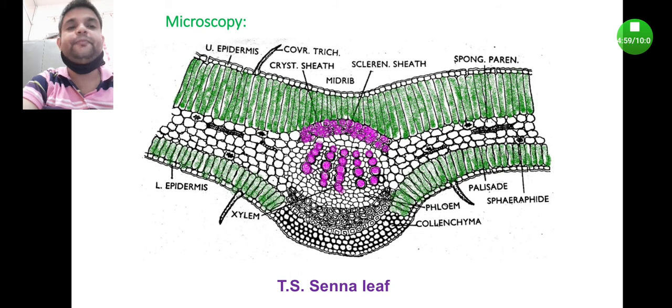Coming to the midrib section, it contains the vascular bundle which consists of xylem and phloem, and also contains collenchyma cells. Presence of paracytic stomata, unicellular covering trichomes, and calcium oxalate crystals in spongy parenchyma are also observed.